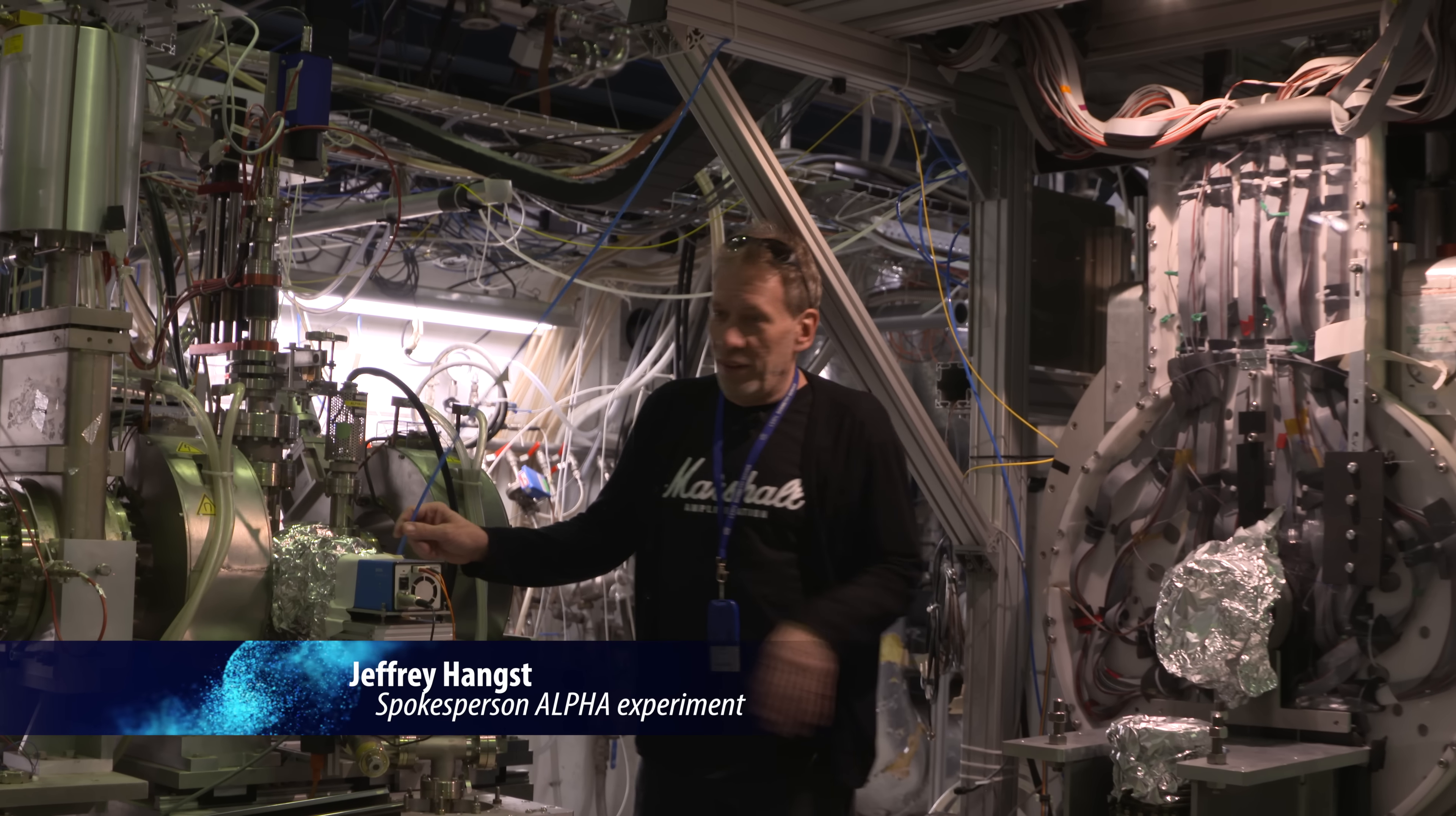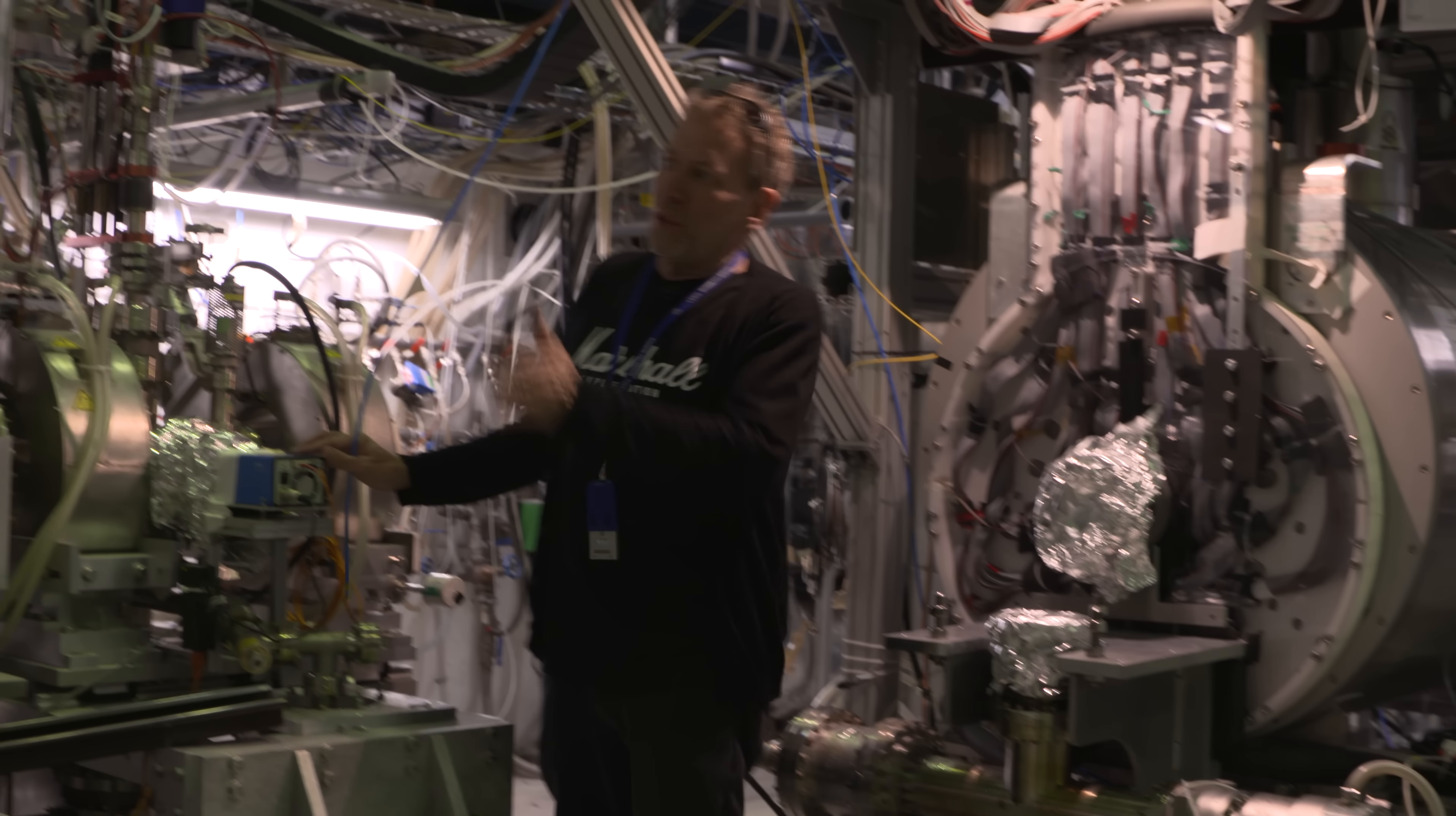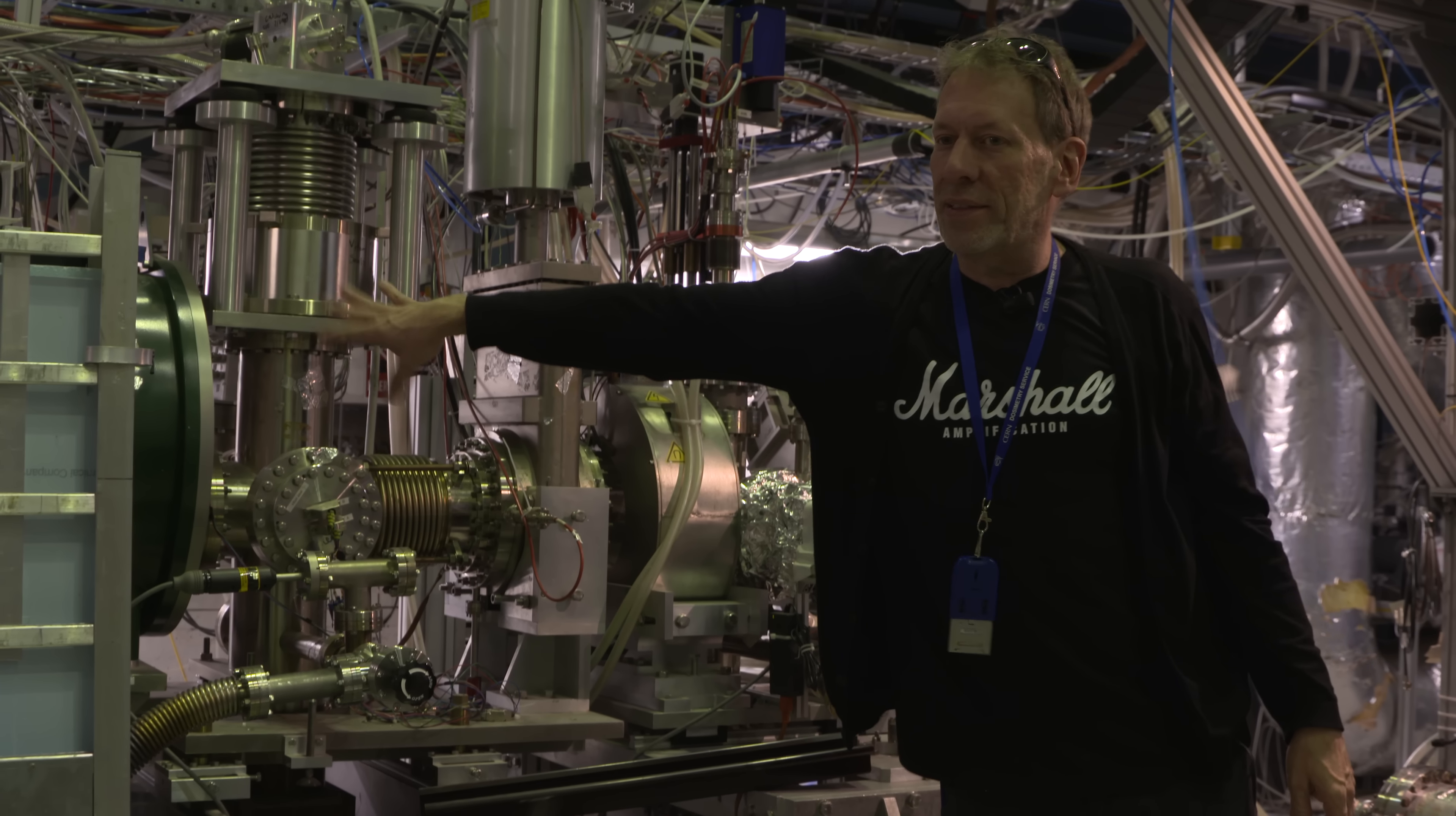We're here now with the ALPHA apparatus. It's a little bit disconnected right now, but it makes it easier to explain. What happens is the antiprotons from the antiproton decelerator come down this beam line and we catch them here in this